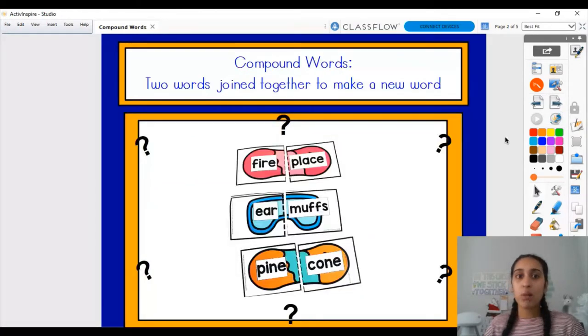So compound words, two words joined together to make a new word. We went ahead and talked about the two words fire and place to say fireplace. And our next example, we have the word ear and muffs. And when we put ear and muffs together, we get the word, what do you guys think?